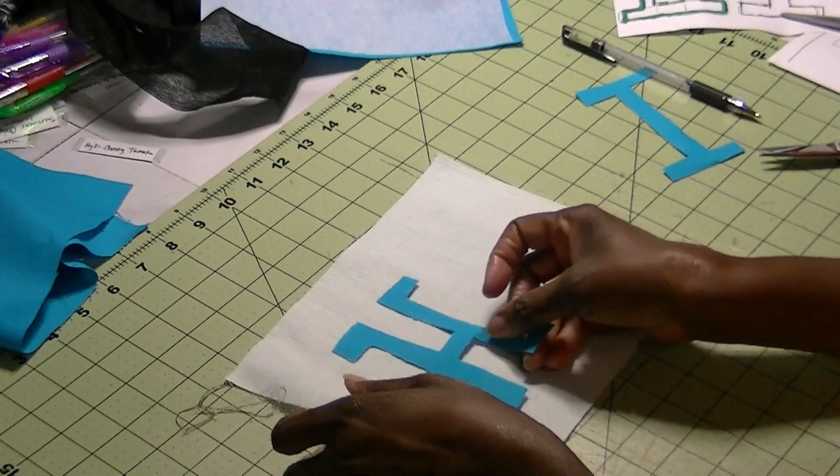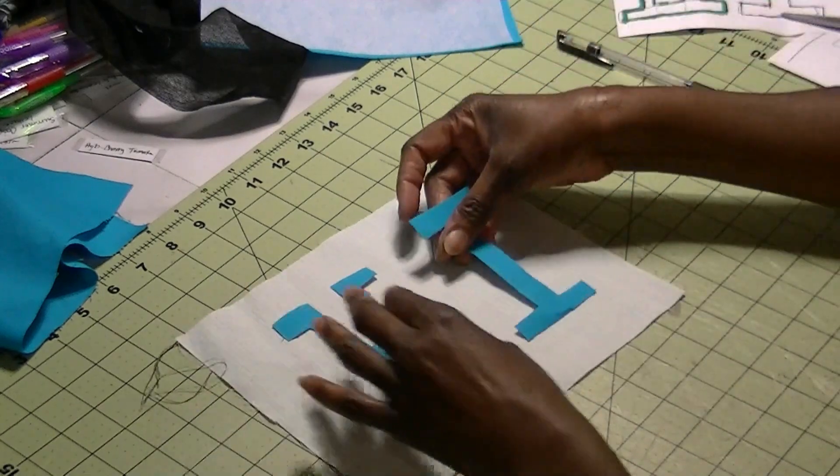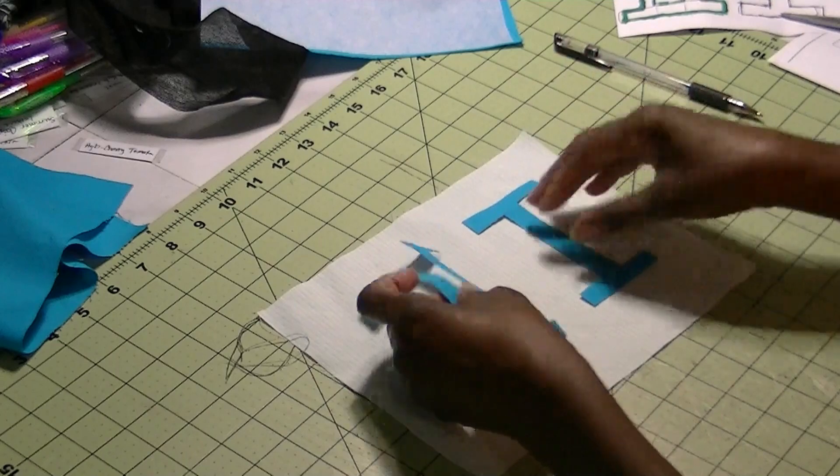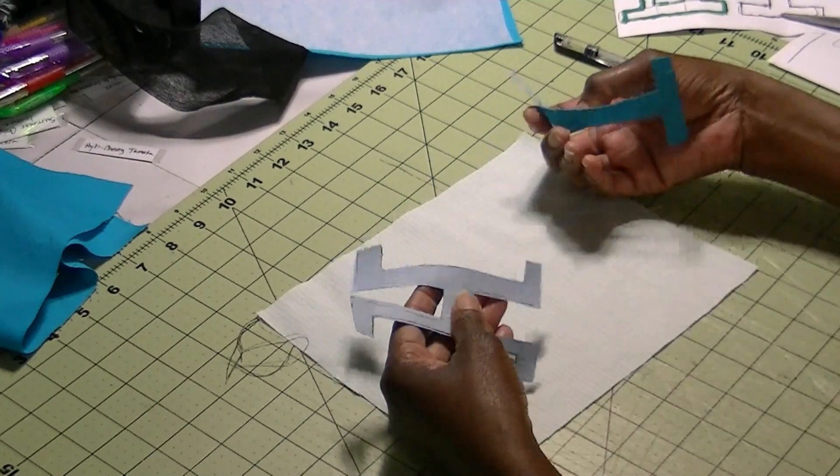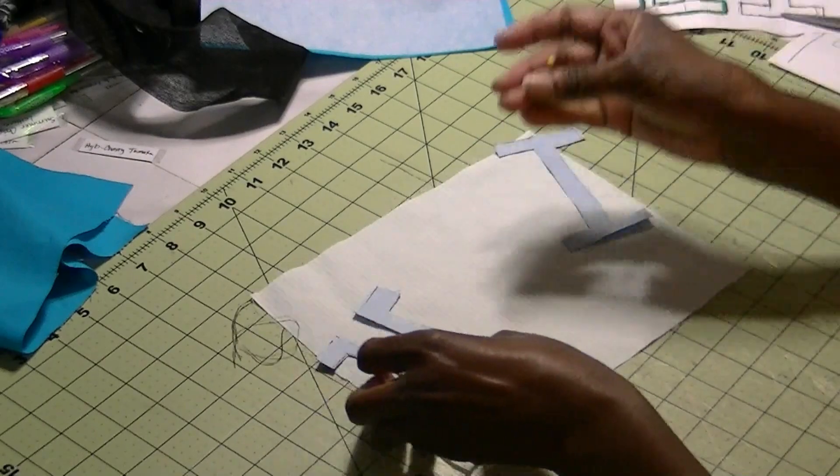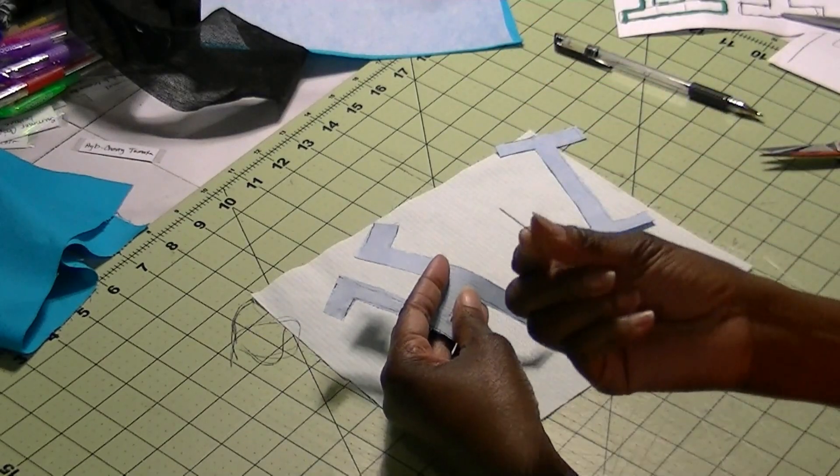And I'm going to put these letters on here to say hi. So to start with, what you want to do is you got to get the paper off the backing. Now my favorite way of getting the paper off the backing is using a straight pen.